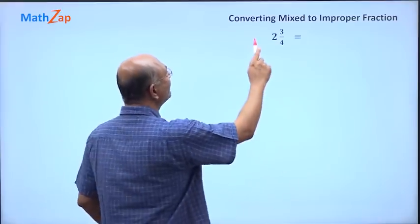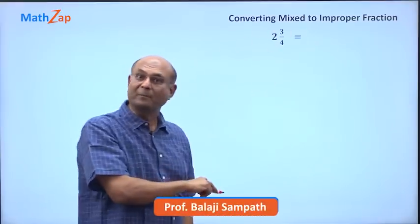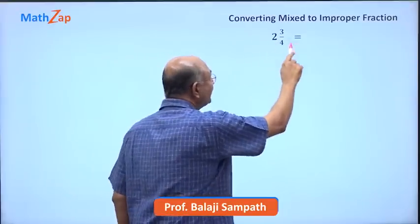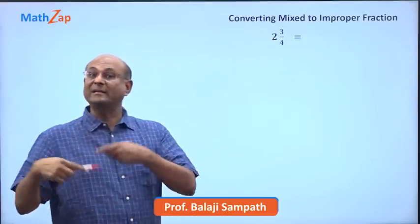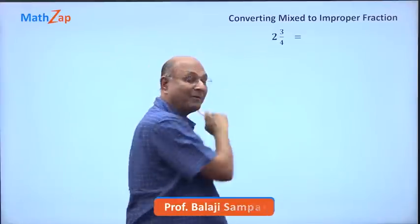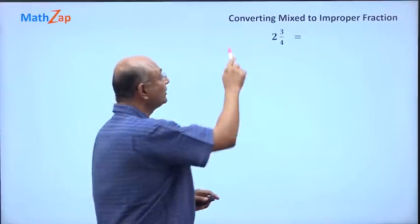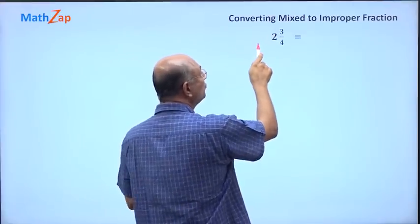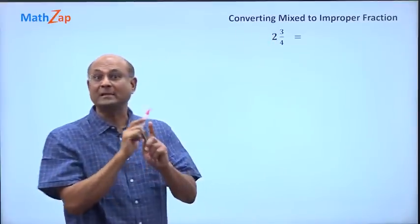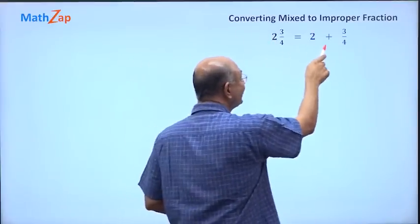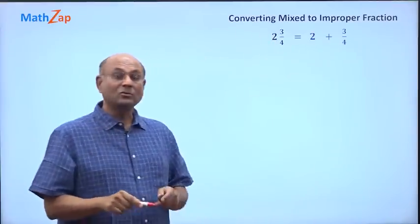Let us now learn how to convert mixed fraction to improper fraction. Here we have a mixed fraction 2 and 3 by 4. What is the meaning of 'and'? It is not a multiplication, it is not 2 into 3 by 4. This is 2 and 3 by 4, and 'and' means plus, so 2 plus 3 by 4.